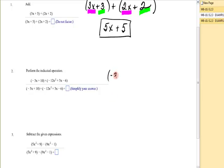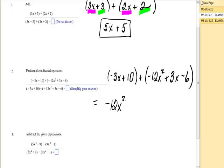Next one. I have -3x + 10 + (-12x² + 3x - 6). Like terms. Well, here is an x² term. There are no other x² terms, so I'm going to put -12x² as my first term. Then I have -3x and +3x. Those are opposites, so that's canceled out. And I have +10 and -6, which gives me +4. I have combined terms that were alike.